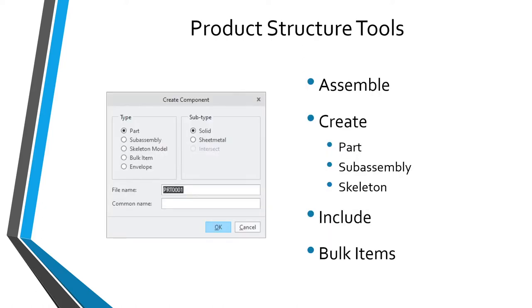The second method of building design intent is the product structure — how you organize your assembly into sub-assemblies and even local groups. Some of the different tools in Creo Parametric for defining your product structure are: the assemble tool, which places the component and defines its constraints; you can also create components in the context of an assembly, including individual parts, sub-assemblies, and skeleton models. The include command allows you to add an object to the product structure without adding the component's geometry.